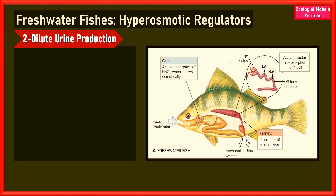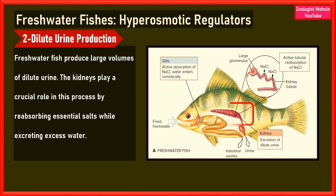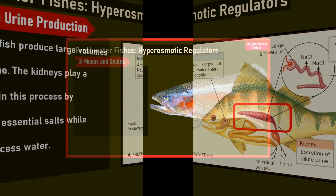The second strategy is excretion of dilute urine. To prevent excess water from accumulating in the body, freshwater fish produce large volumes of dilute urine. The kidneys play a crucial role by reabsorbing essential salts while excreting excess water. This dilute urine helps to remove water that has diffused into the fish without losing too many valuable ions or salts.